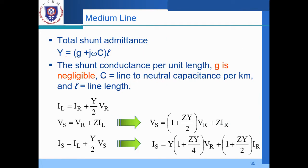And here the total shunt admittance is given by Y equal to G plus jωCℓ. Again, this is the distance of the transmission line in kilometer. So G, this is the shunt conductance of the shunt admittance. Well, this is actually the inversion of R. So shunt conductance per unit length, G is negligible. So by the way, G equal to 0, it is negligible in medium line. But C, the line to neutral capacitance per kilometer is calculated. So we have C, we have ω, so we have j as well and also the ℓ.